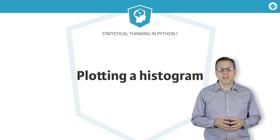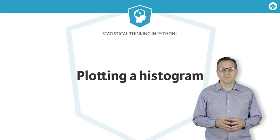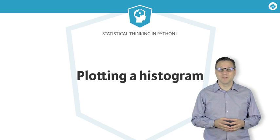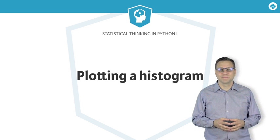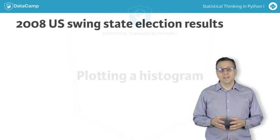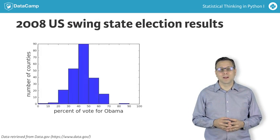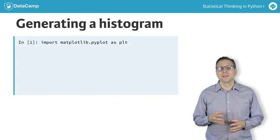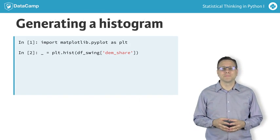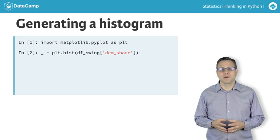We saw in the last video that a histogram can be a useful plot to generate when exploring a dataset. Now let's go over how we can create one using Python. We are interested in the fraction of the vote that went to Barack Obama in each county. We can plot this as a histogram using matplotlib.pyplot module's hist function. We pass it the dem_share column of the data frame.